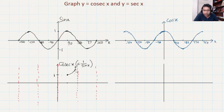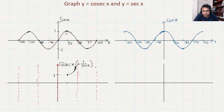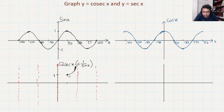The graph keeps increasing and then becomes nearly straight because it cannot touch the asymptote line. Coming toward 180 degrees, it is increasing close to the asymptote without touching it. The same situation happens on the left side of 90 degrees — sine X is going down so cosec X is going up, approaching the asymptote.